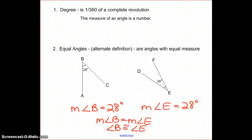Notice the difference: when we have the equal sign, we're talking about measure. And when we have the congruent sign, we're talking about how angles are congruent to one another.